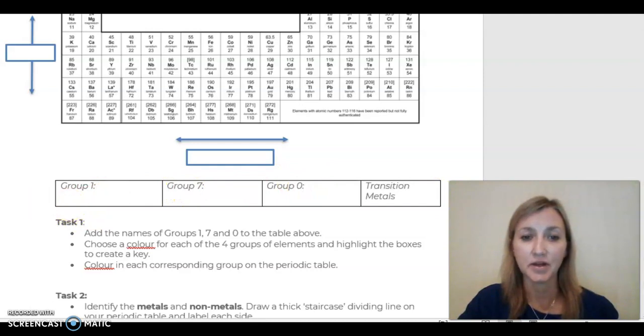The first part of the task is to add the names to the boxes for each of the groups of elements we've learned about in today's lesson. You have Group 1, give the name of that group, 7 and 0, and the transition metals are given.